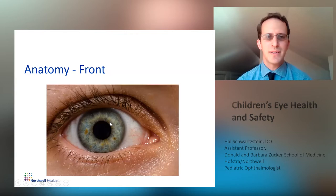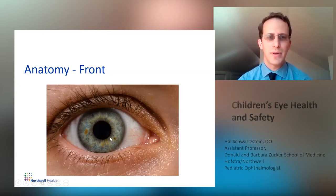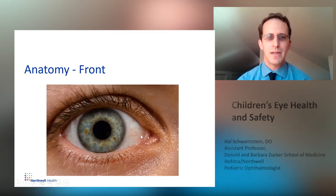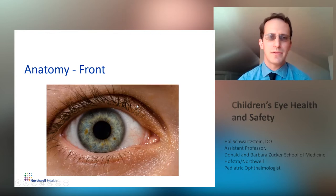This is what you typically see. Again, the clear part here is the cornea. This is the pupil. This is the iris. And the white part of the eye is the sclera. Overlying the sclera is the conjunctiva — that's clear. And of course, your eyelids.